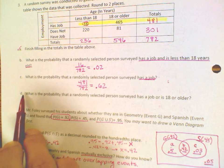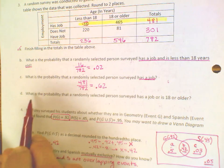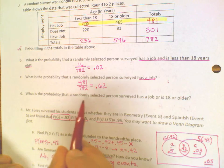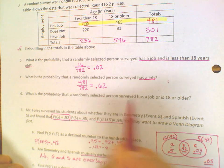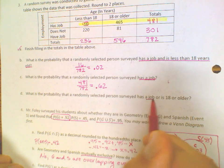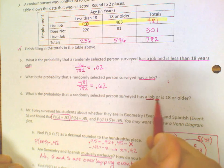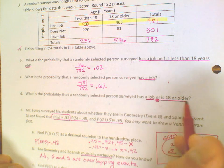And then finally, part D says, what is the probability that a randomly selected person surveyed has a job or, key word, or is 18 or older?